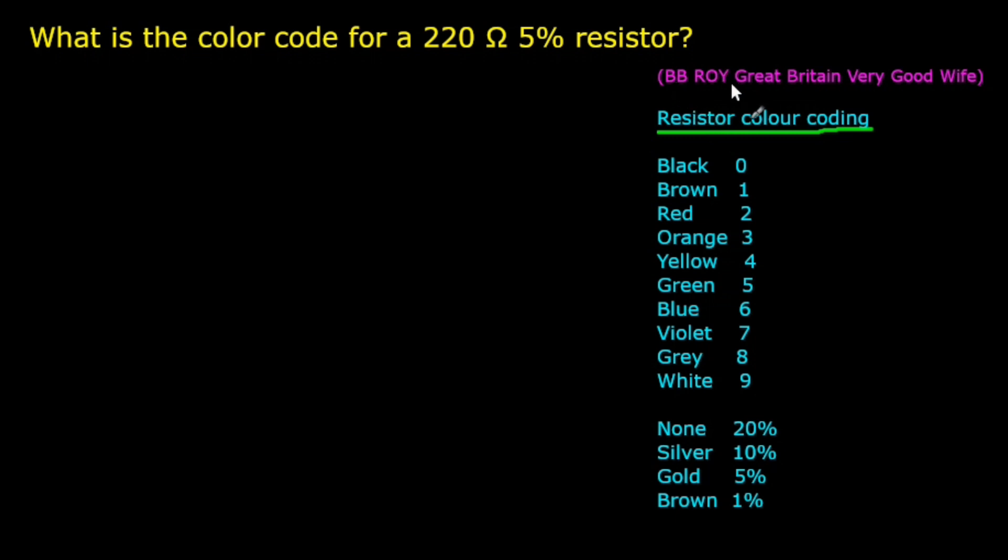We can memorize the sequence of colors by BB Roy Great Britain Very Good Wife. We can find the color code as two methods, that is, a 4 band or 5 band.